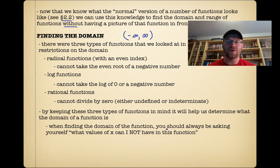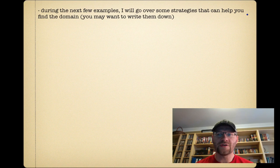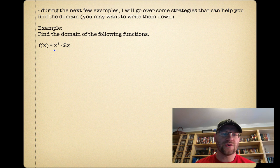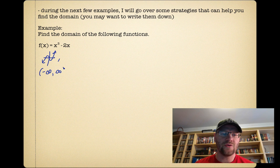When finding the domain, you should always ask yourself: what values of x can I not have in this function? In a lot of cases, you'll have a large range of values for your domain but just a few you can't have. For the first example, f of x equals x cubed minus 2x — it's not a rational, root, or log function. We know that an x cubed function has no restrictions on the domain, so the domain is negative infinity to infinity.